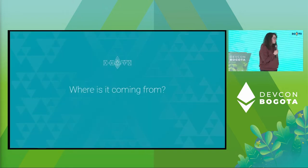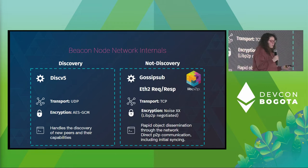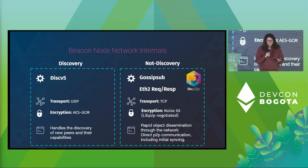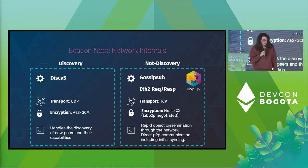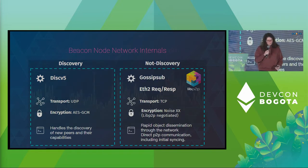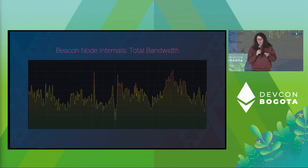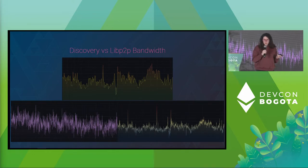Let's check where the bandwidth is coming from. For the sake of this talk, we are going to separate protocols between discovery and non-discovery. Discovery has its own transport, its own encryption, it's over UDP, whereas all the live P2P protocols are over TCP. We have GossipSub and the request-response protocol. The one we are going to be focusing on mainly in this talk is GossipSub. Now, looking at total bandwidth for one of our nodes over the last couple of days — the purple one is discovery bandwidth and the other is live P2P bandwidth.